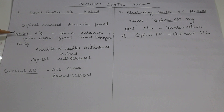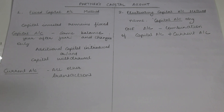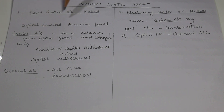In Fixed Capital Account Method, two accounts are maintained for each and every partner — Capital Account and Current Account. Suppose A and B are two partners in a firm maintaining their capital as per Fixed Capital Account Method. In that case, A will have a Capital Account and a Current Account, B will also have a Capital Account and a Current Account. Capital invested remains fixed in Fixed Capital Account Method.